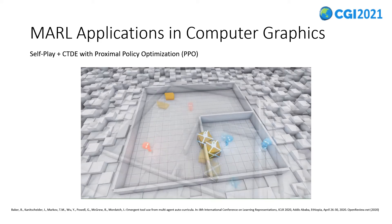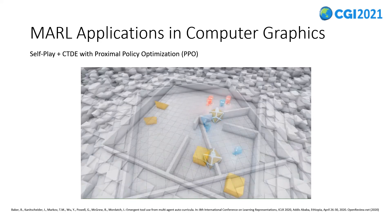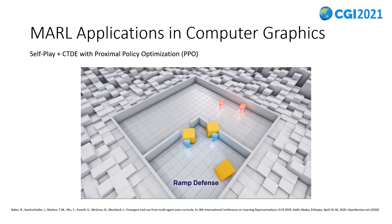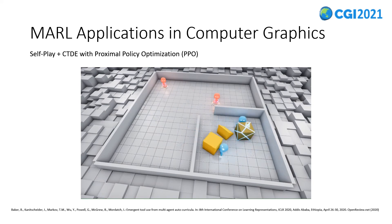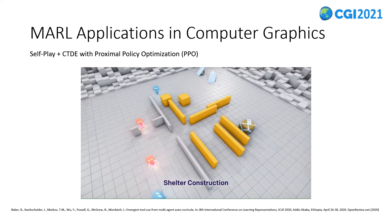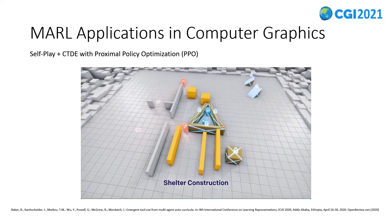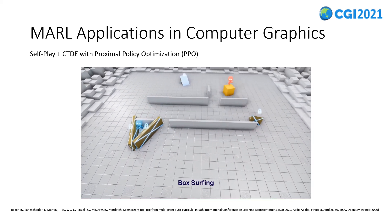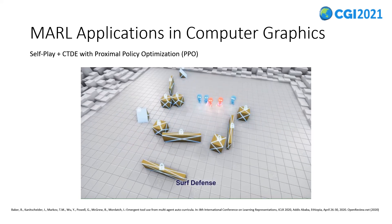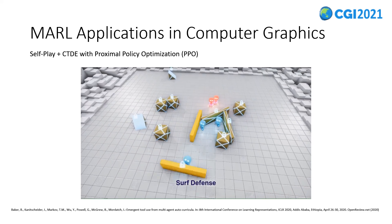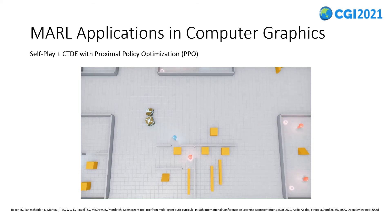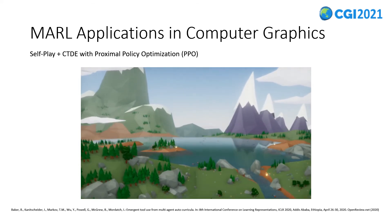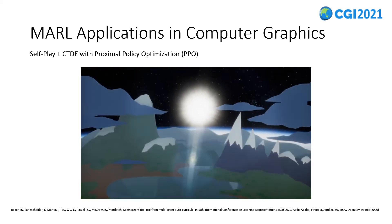OpenAI set up a hide and seek environment with two hiders and two seekers, together with some boxes and ramps as tools. They use self-play to train agents with opponents at an appropriate skill level, and a decentralized training and decentralized execution setup with proximal policy optimization algorithms to optimize the policies. As shown in the video, after millions of training steps, the agents are able to take very reasonable and impressive actions.